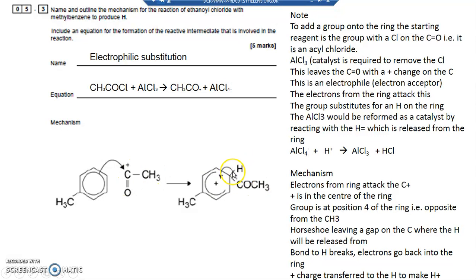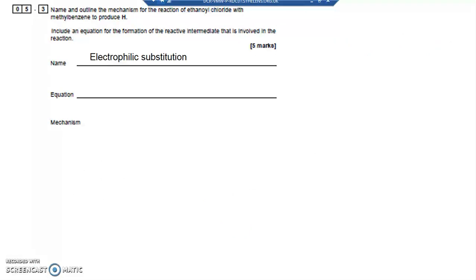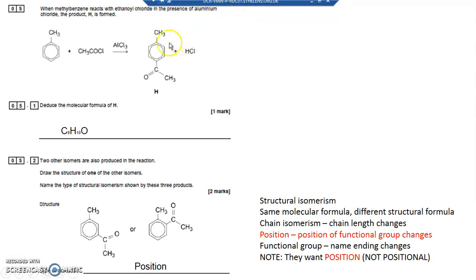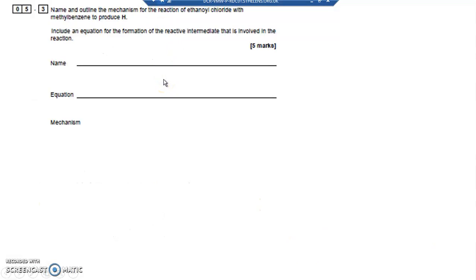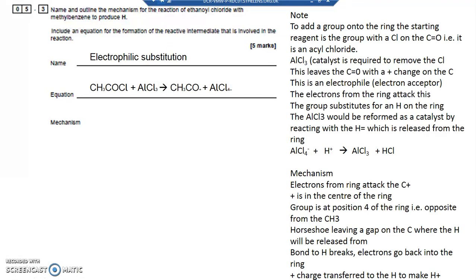And there's the COCH3. COCH3 joined on. I've drawn the H, and then that goes back into the ring, and then that is going to make my product, which is this. Phenylethanone, methylphenylethanone.